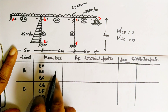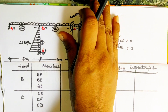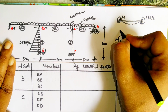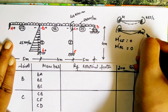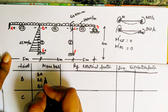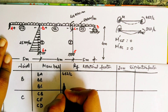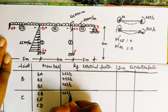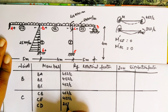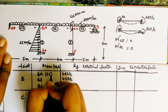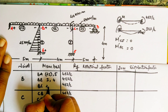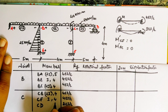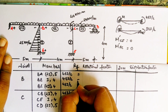Next step is finding the rotation factor. The formula we use: for a fixed-fixed beam, if we apply a moment M at the near end, a moment is generated at the far end which restricts deflection — the amount is 4EI/L. For a hinge it is 3EI/L. We substitute these values for all members — BA, BE, BC — being careful which formula to use. Only CB will use 3EI/L since it ends at a hinge; all others use 4EI/L.